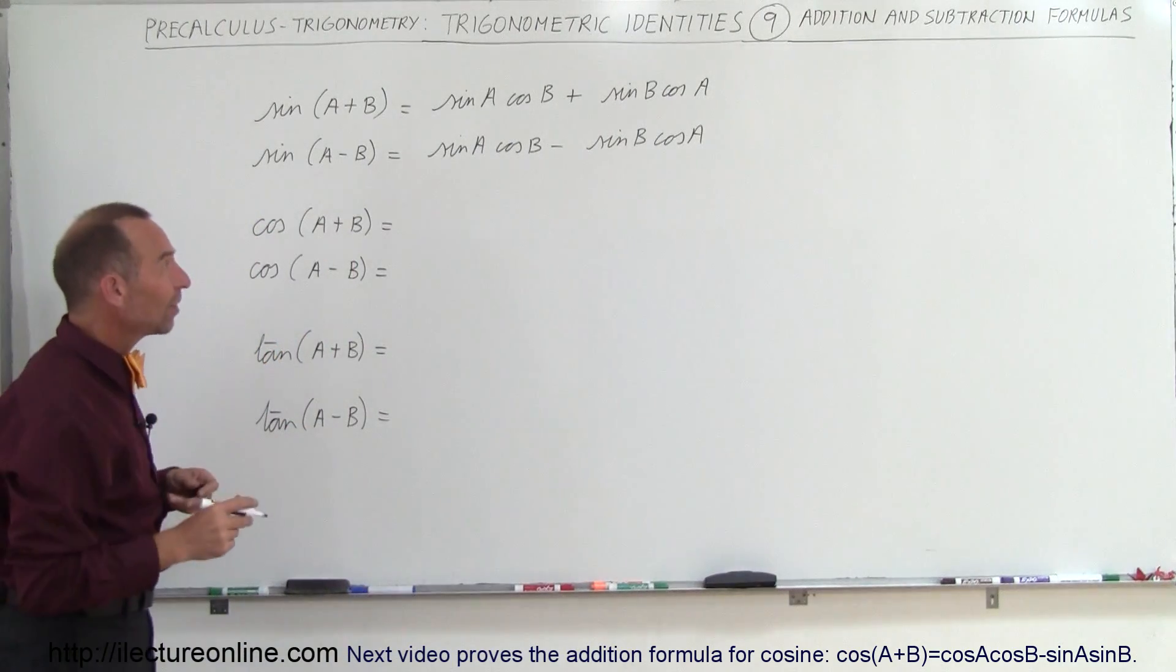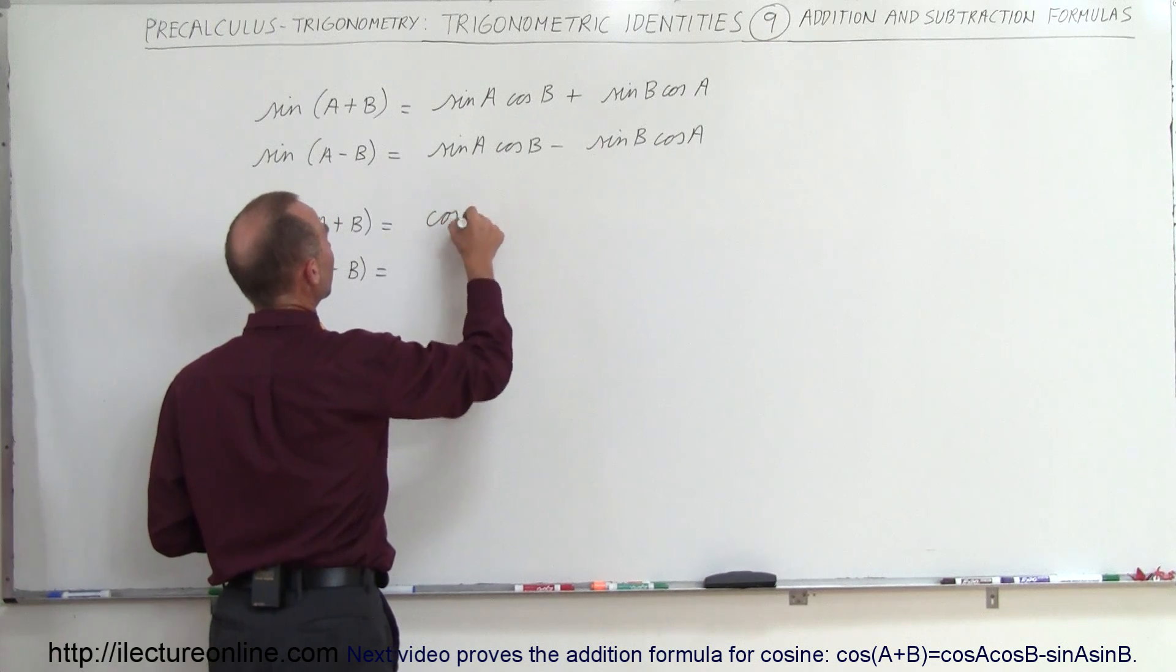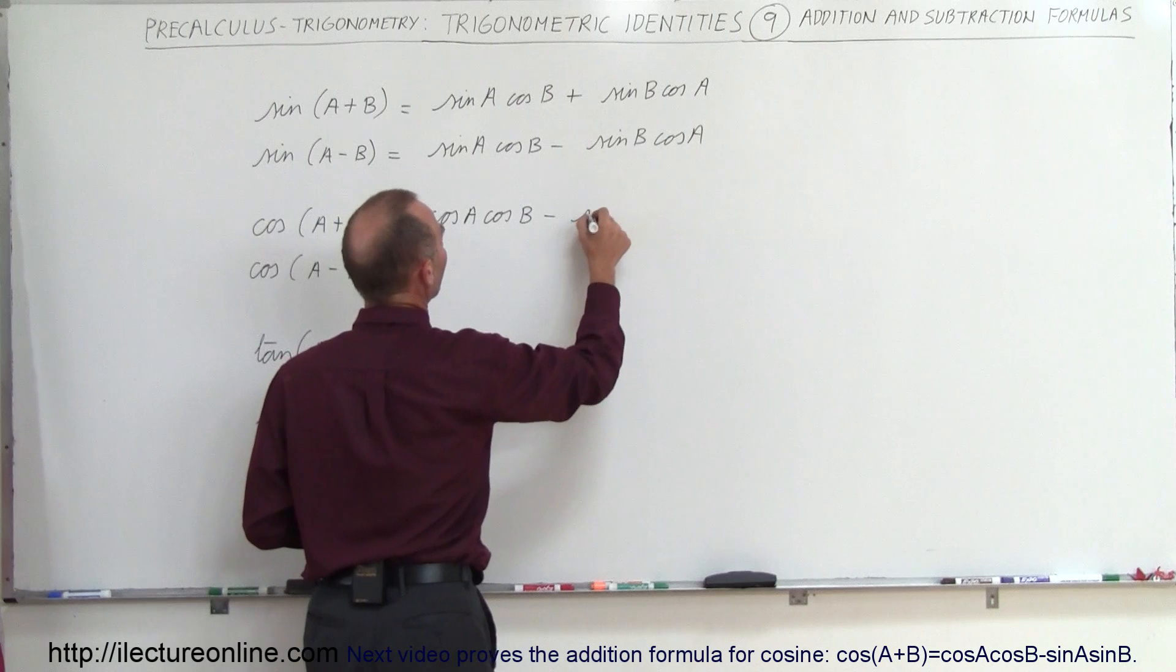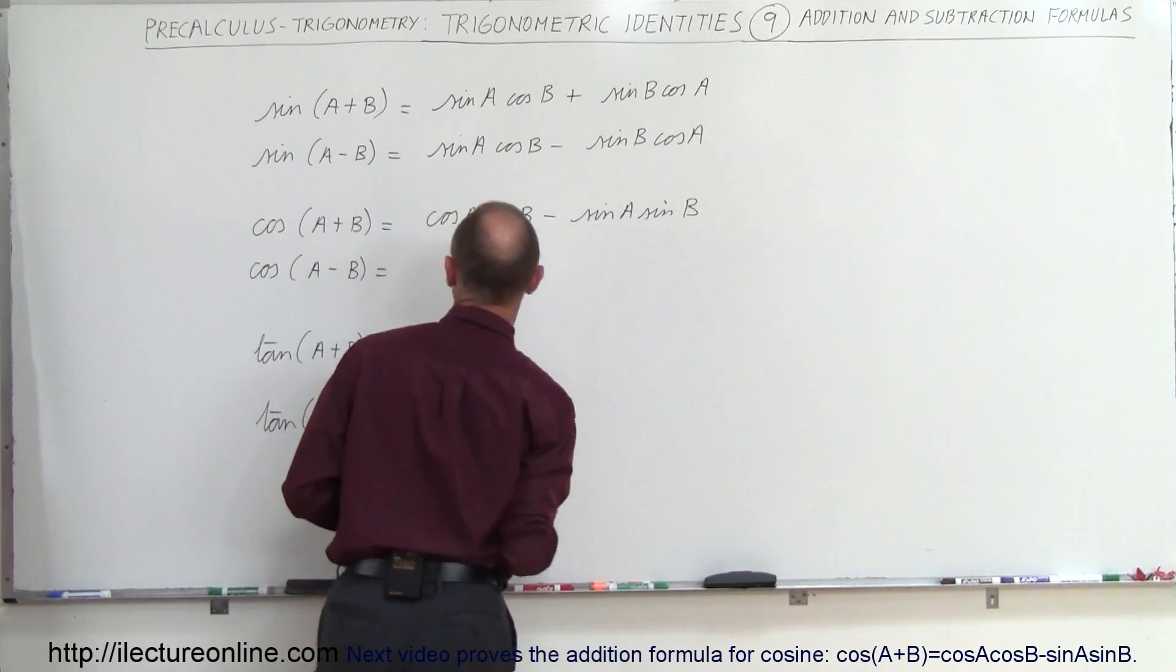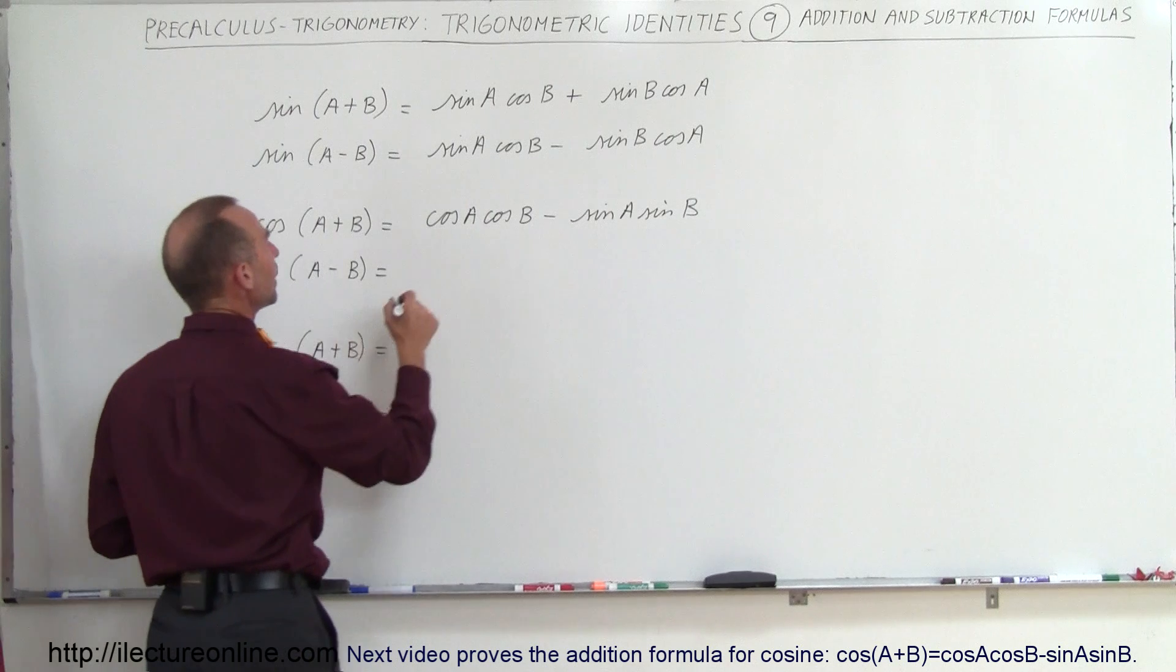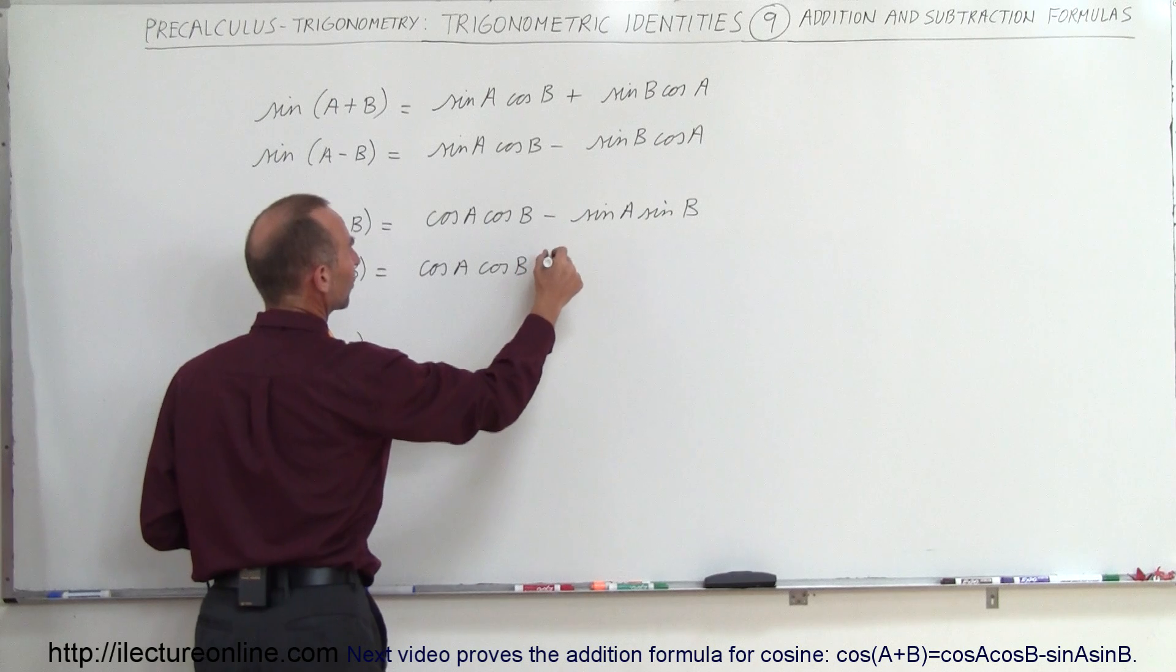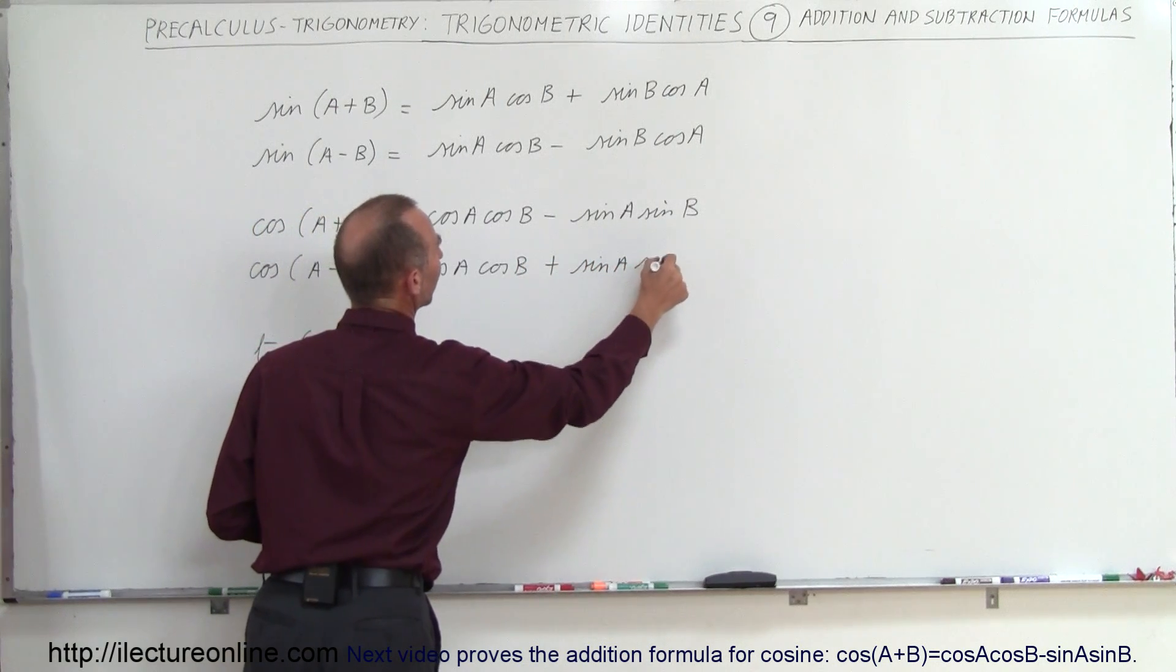Now when we come to the cosine, that's a little bit different. The cosine of A plus B is cosine A times cosine B minus sine A times sine B. And the cosine of A minus B is cosine A times cosine B, and the only thing that's different is that this becomes plus sine A times sine B.